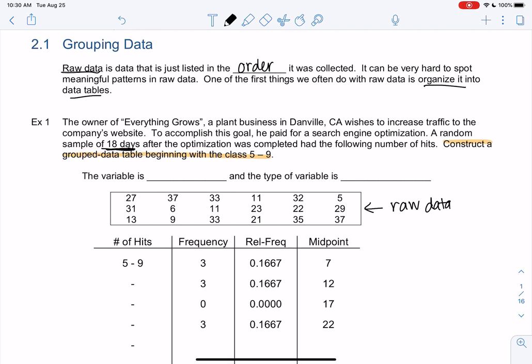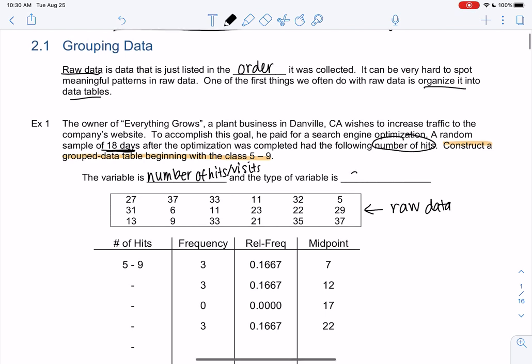Before we make tables, we're going to figure out what the variable is and the type. We went over the type of variable in chapter one, because we might organize things a little bit differently depending on the type. In this case, our variable would be the number of hits or number of visits. The type is a number. I think there are gaps because you can't have half of a visit or 0.75 of a visit. You can have one visit or two visits or three visits. If you don't remember, this was called discrete. There are gaps. Discrete is numerical data, but it has gaps.